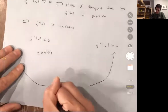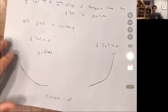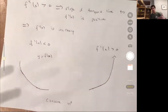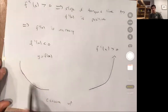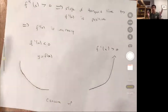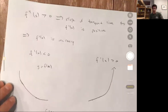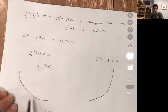Both of these shapes have the same property — the slope is getting more positive — and we call this concave up. When the second derivative is positive, we call it concave up. The way you can think about it is: if I poured water into this shape, the water would stay there — it would be held up by the function.